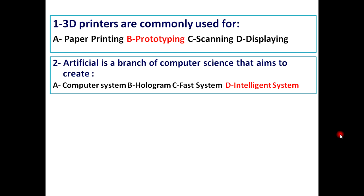Artificial intelligence is a branch of computer science that aims to create: A - computer system, B - holograms, C - fast system, D - intelligence system. The answer is intelligence system.